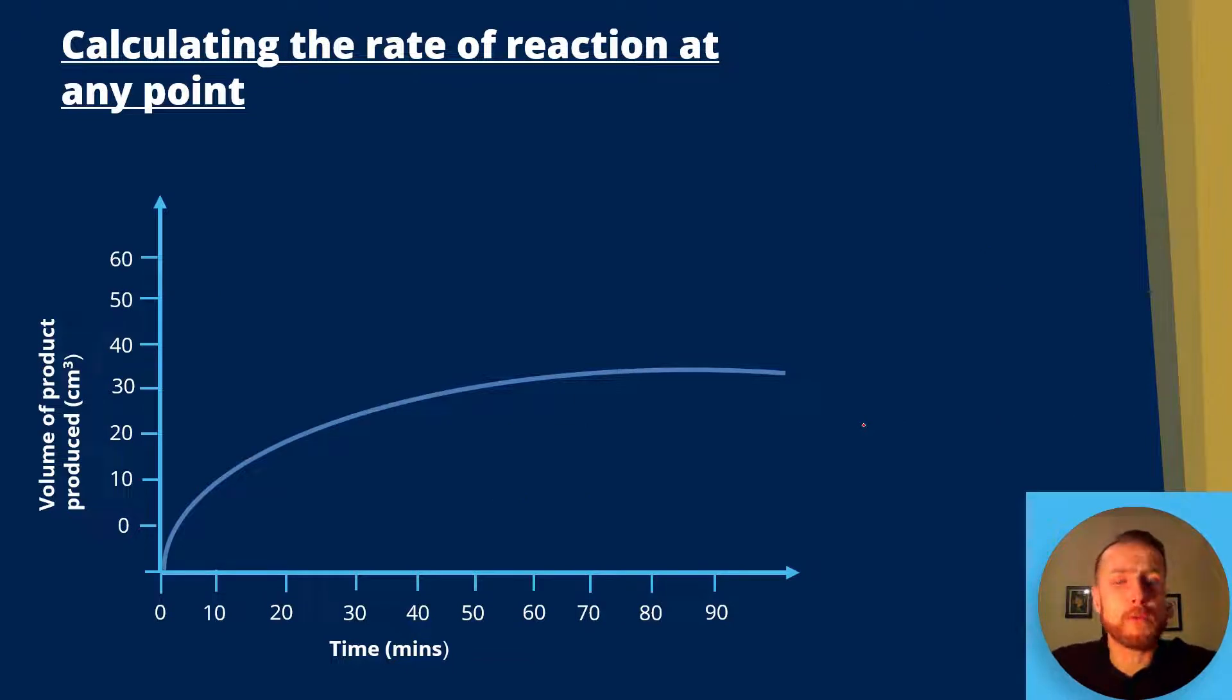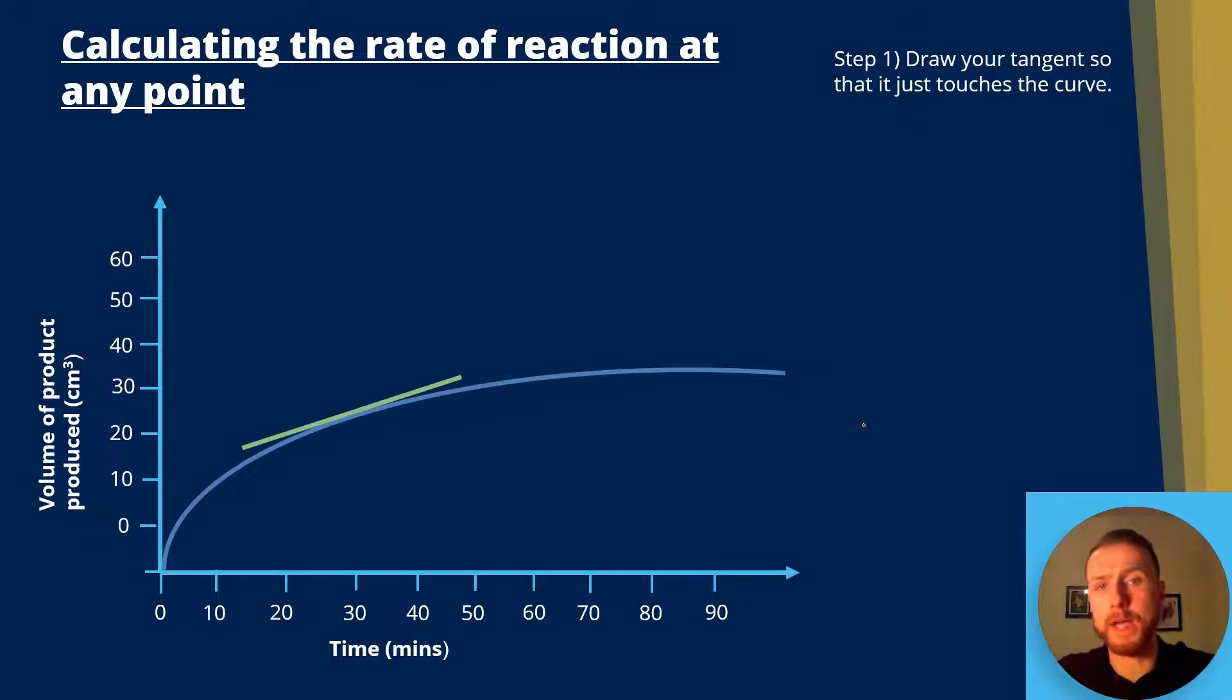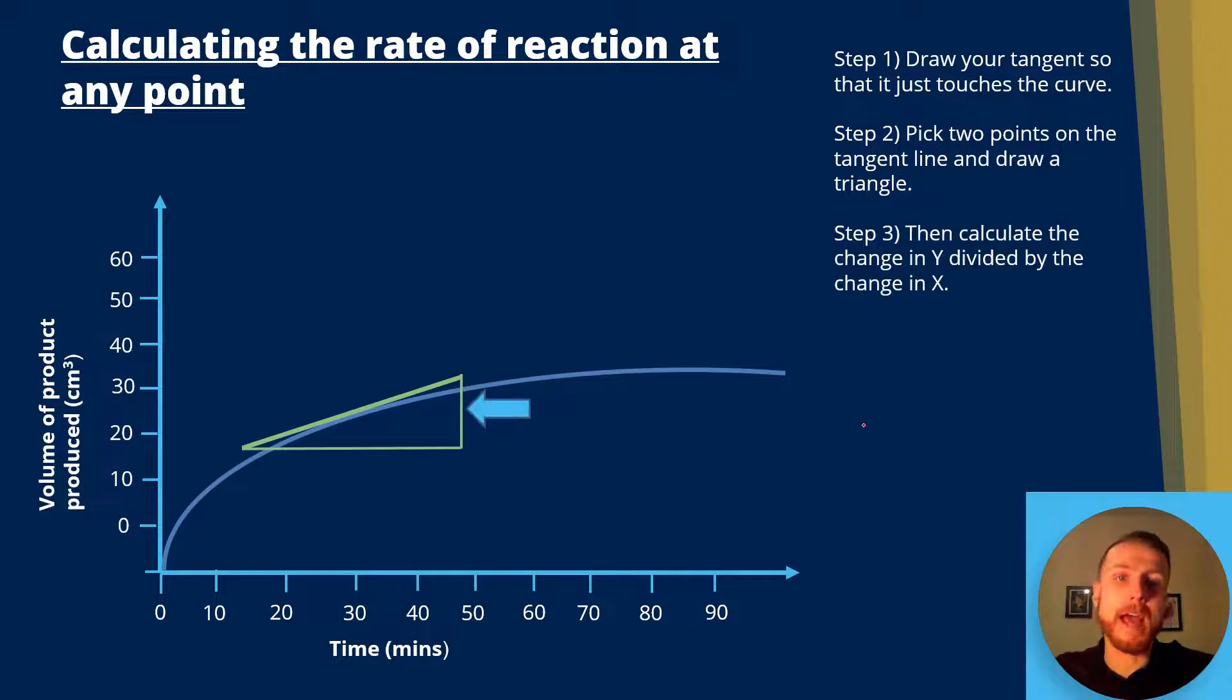Now, what do we do if we want to calculate the rate of reaction at any point by drawing a tangent and calculating it? Well, step one is to draw your tangent so it just touches the curve like I mentioned before. So let's take this point here. Step two is to pick two points on the tangent line and draw a triangle. So here's my triangle.